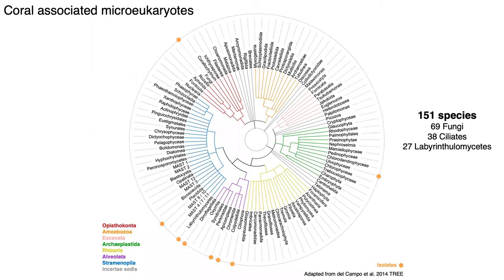Plotting all the micro-eukaryotes described from corals onto the eukaryotic tree shows eight groups within the eukaryotes described from corals, containing 151 species — most belonging to fungi, ciliates, and labyrinthulomycetes. Our knowledge about micro-eukaryotes in general is scarce, and within corals it's even scarcer. Most information comes from isolates characterized through microscopy, and that is all.